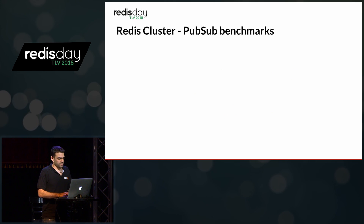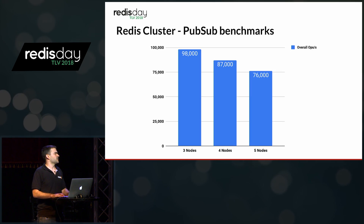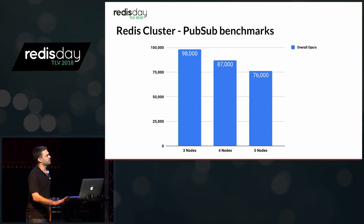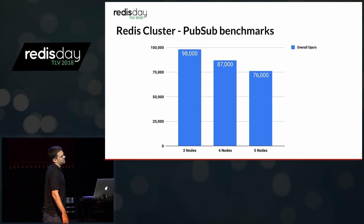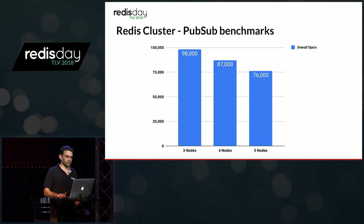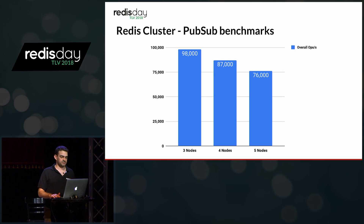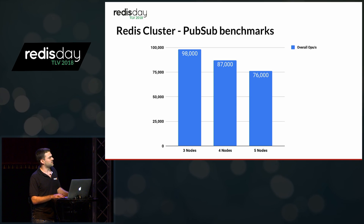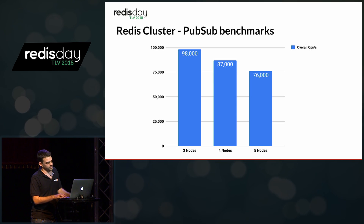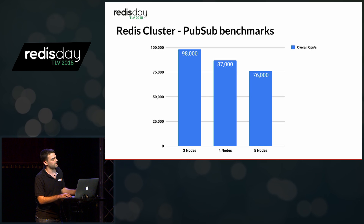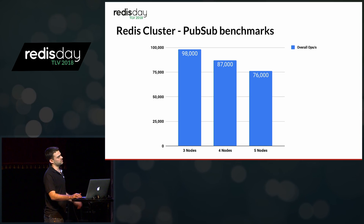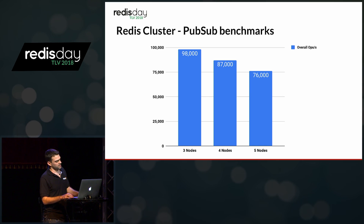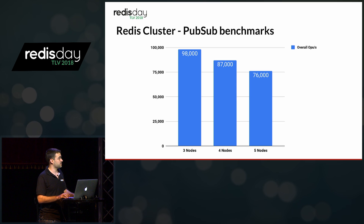I ran benchmarks on a three-node cluster, a four-node cluster, and a five-node cluster. The more nodes I added, the less overall throughput I got. The three-node cluster was about the same as a single Redis node, meaning the two additional nodes added no more throughput. And the more nodes I added, the fewer overall messages I got.